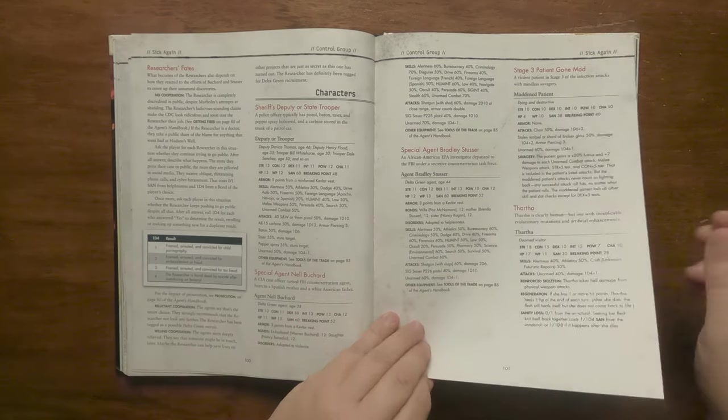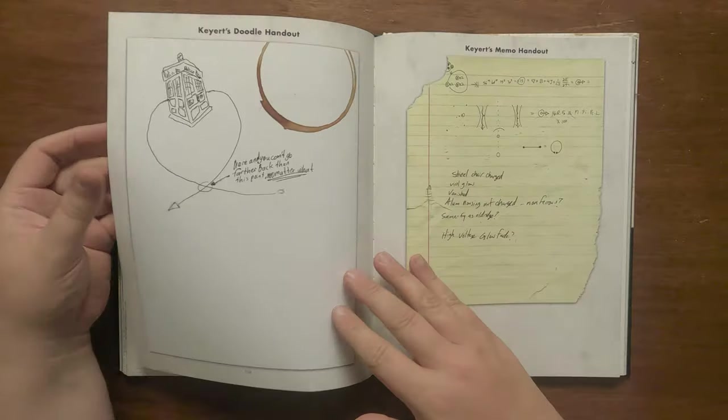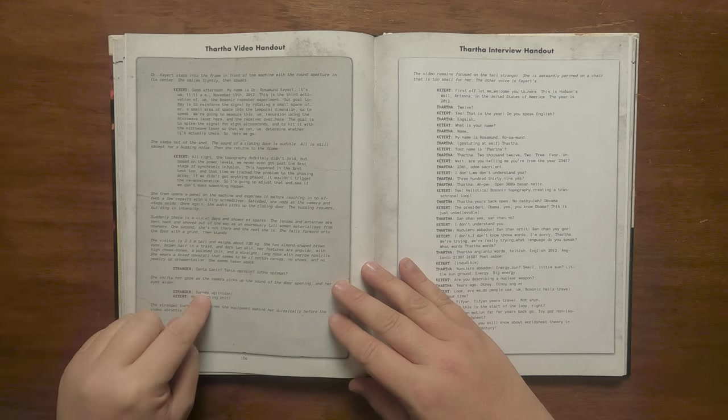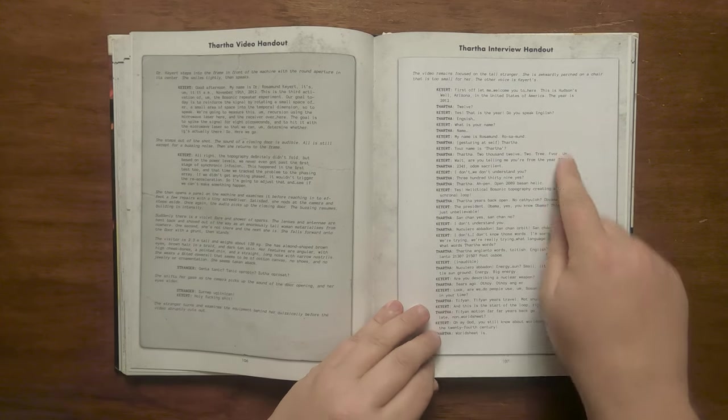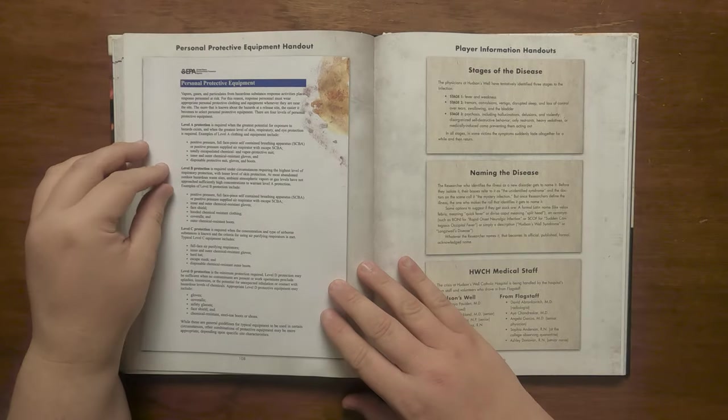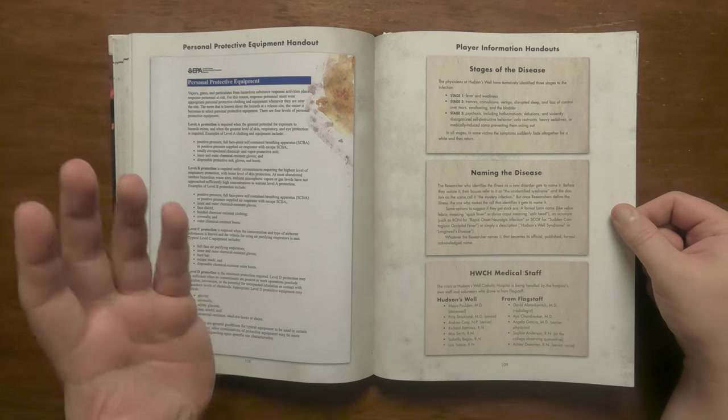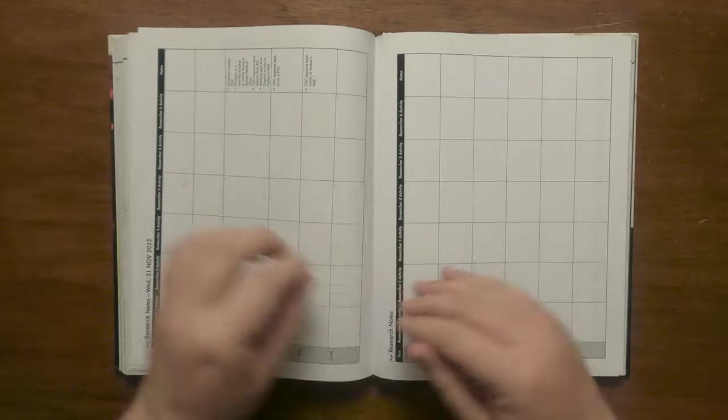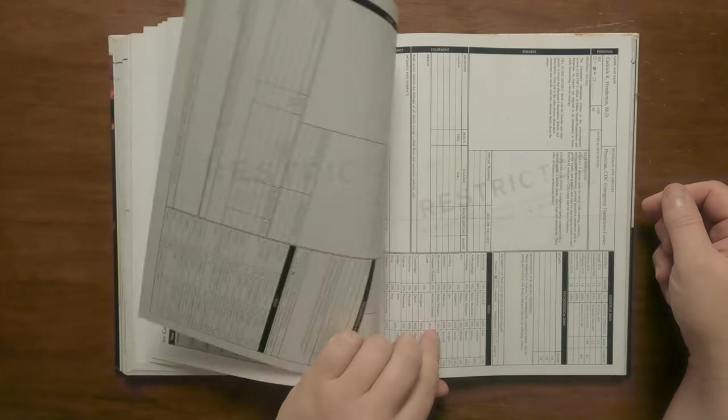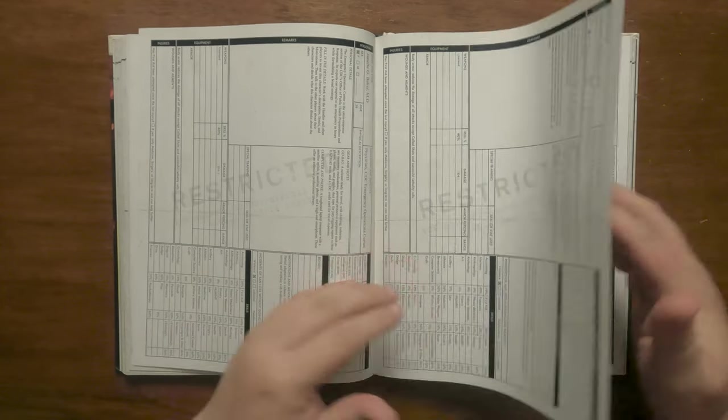After this we have all of the NPCs in the scenario, including the time traveller Thartha. There's a map of Hudson's well, Kyat's suicide note, as well as the handout doodle and memo. There's a descriptive piece of the text of Thartha's appearance, gleaned from the video files they find, and a transcript of the interview with Thartha which makes a very interesting read, hinting at some awful things that happen in the future. There's also information on PPE equipment, as well as three handouts that serve as reminders for the stages of the disease, naming the disease and a list of all medical staff. After this we have a mound of sheets for the researchers to keep an hour by hour record of their activities on, as well as a list of contagion developments which contains information on when each patient hits the various stages and dies. Finally we have a list of the pre-gen characters.